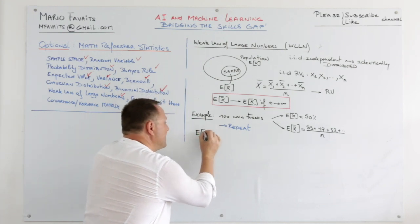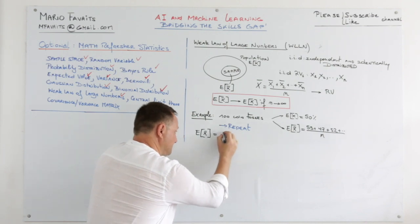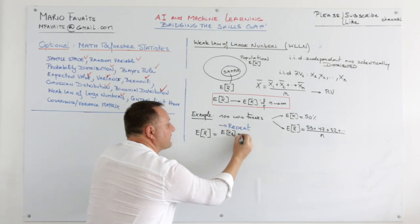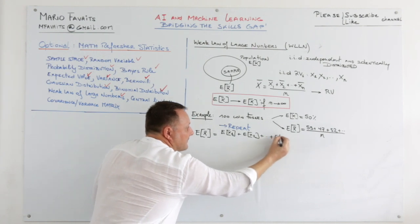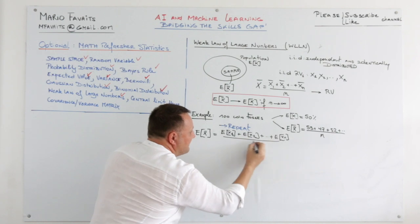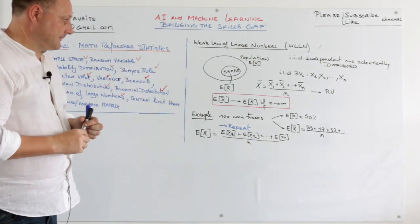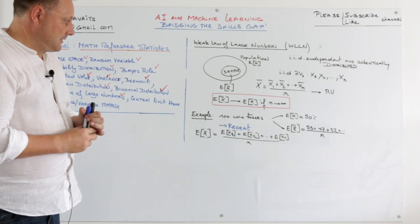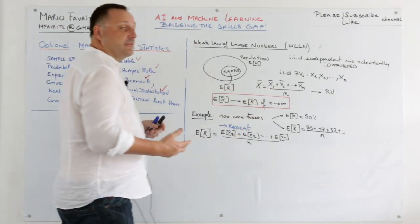The sample mean now equals the expected value of X1 plus the expected value of X2 and so on till the expected value of Xn divided by n. That is because the random variables are independent.